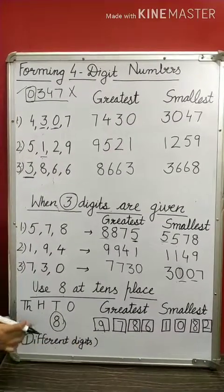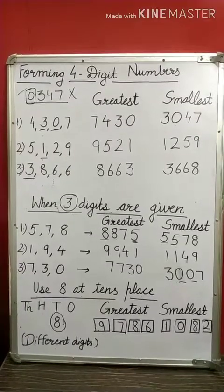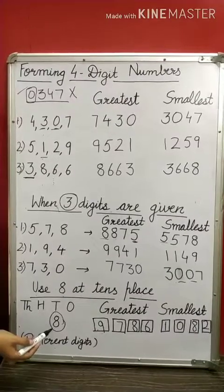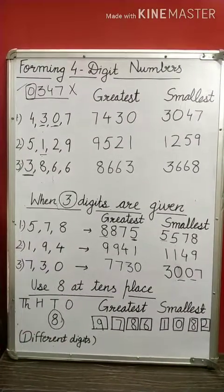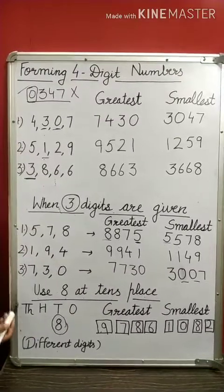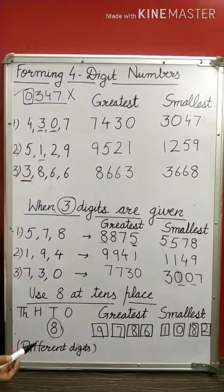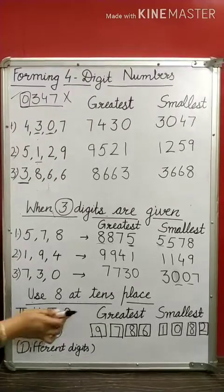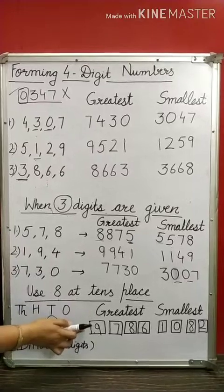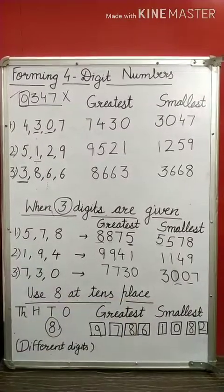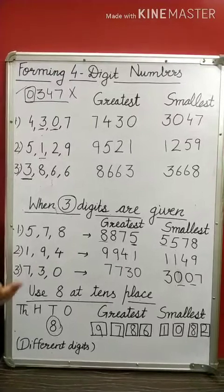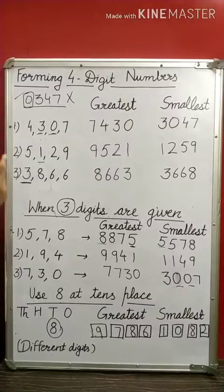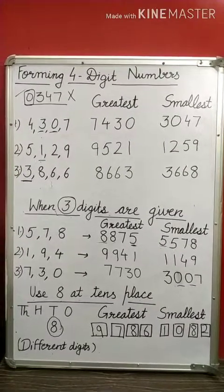It can be any number at the place of 8. You may be given further questions in your book where you need to use 7 at the ones place, 3 at the hundreds place, or 5 at the thousands place. In those specific cases, choose your digits accordingly — greater digits for the greatest number, and smaller digits beginning from 0, 1, 2, 3 for the smallest. Hope you are clear with all these three concepts. See you in the next video.